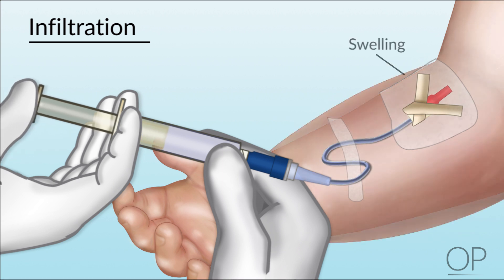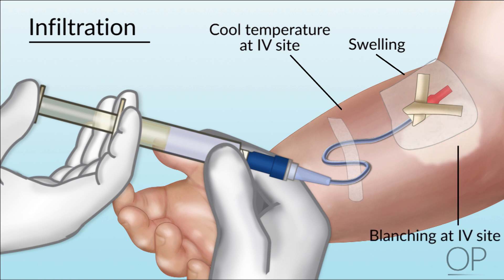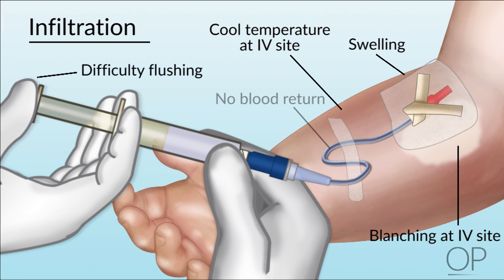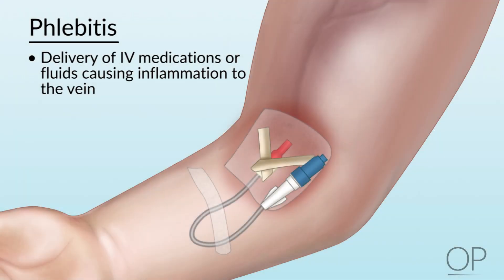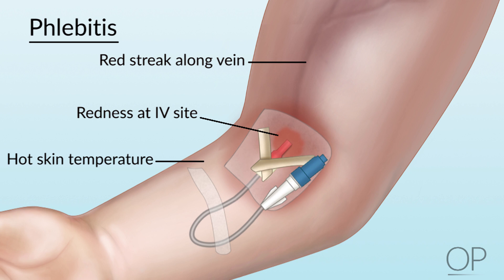Signs and symptoms of infiltration include swelling and cooler temperature around the IV site, blanching or white areas around the site, difficulty flushing, and cessation of blood return with aspiration. However, lack of blood return alone does not indicate the IV no longer works — always flush to assess patency, and if it flushes easily without signs of leaking or blanching, it may still be usable. Phlebitis is caused by medications or fluids delivered intravenously that cause inflammation to the vein. Indications include redness at the IV site, a red streak up the extremity along the vein, a hot feeling of the skin, or the vein feeling like a hard cord underneath the skin.